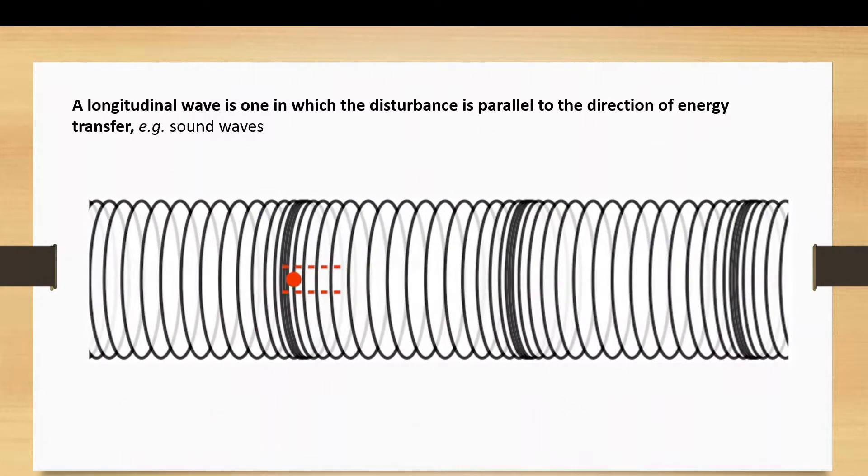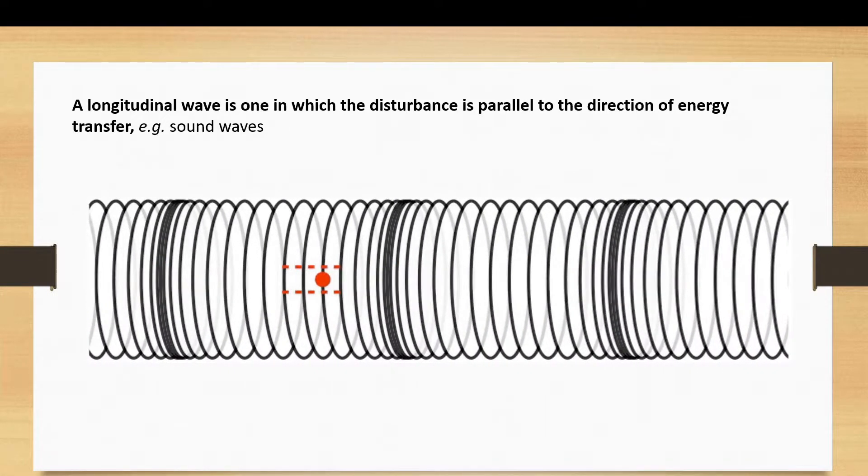By contrast, a longitudinal wave is one in which the disturbance is parallel to the direction of energy transfer. So the definitions are very similar. You just need to know that transverse is perpendicular and longitudinal is parallel.